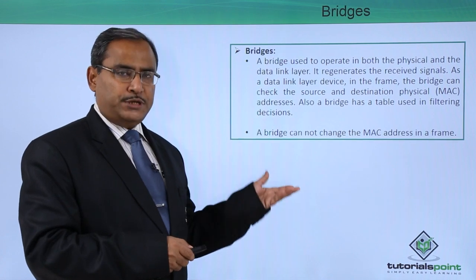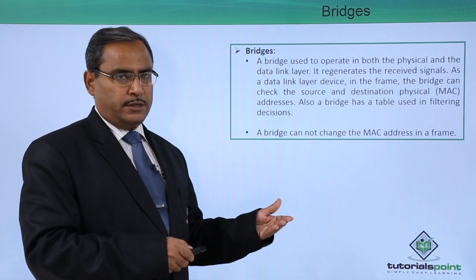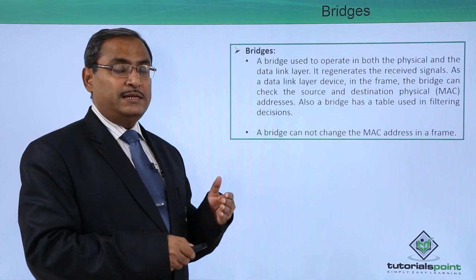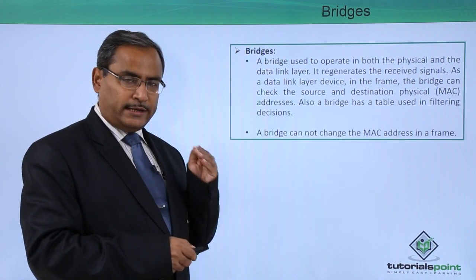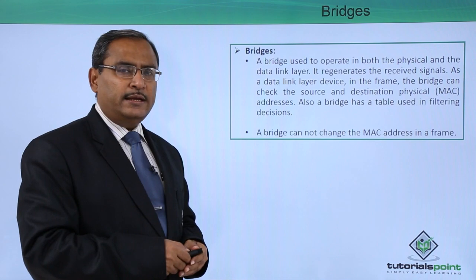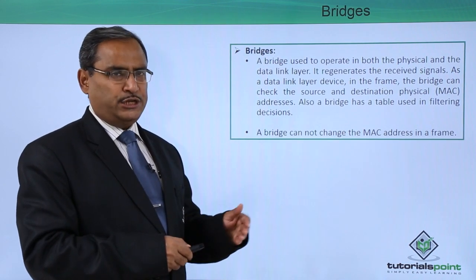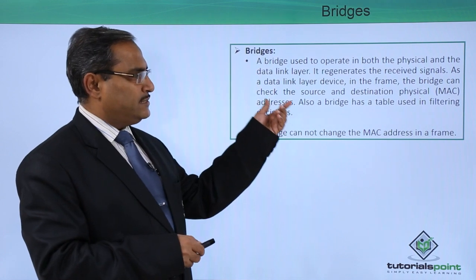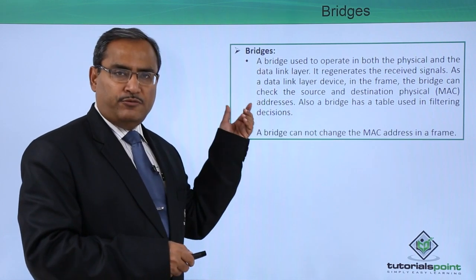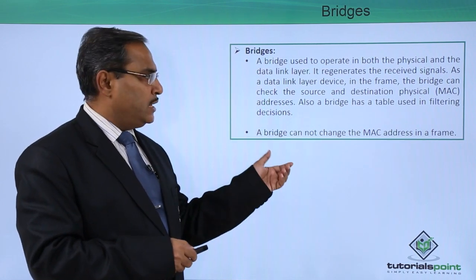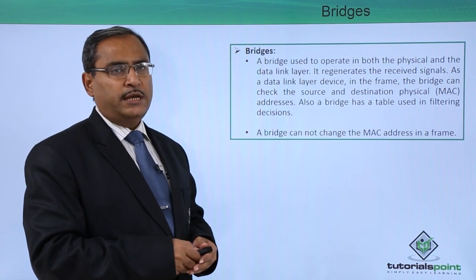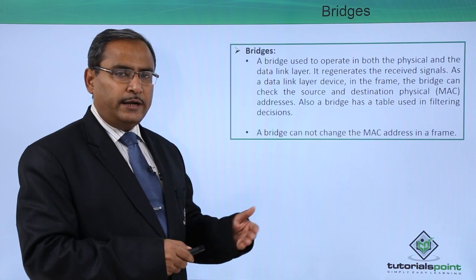Like a repeater, the bridge can repeat the respective signals, but along with that, as bridge is working up to the data link layer, it can see the source and destination MAC addresses. Here the source and destination MAC addresses can be read, can be accessed by this bridge, and also bridge is having a table with the help of which it can take some filtering decisions.